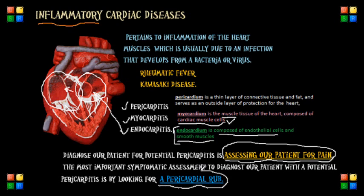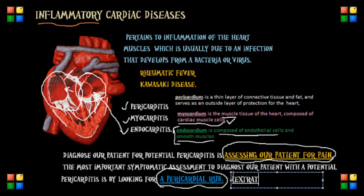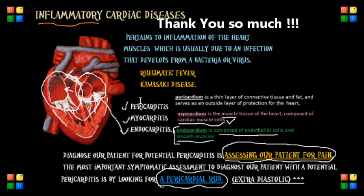A pericardial rub — sometimes called a pericardial friction rub — can be detected using a stethoscope, and it's a sign of inflammation. Upon auscultation, there is an extra heart sound aside from the typical systolic and diastolic: there would be an extra diastolic sound. It becomes a three-component heart sound — one systolic and two diastolics. Some textbooks describe it as resembling the sound of squeaky leather, and it's sometimes also described as a grating, scratching, or rasping sound.